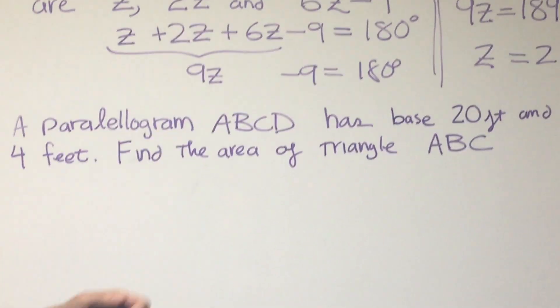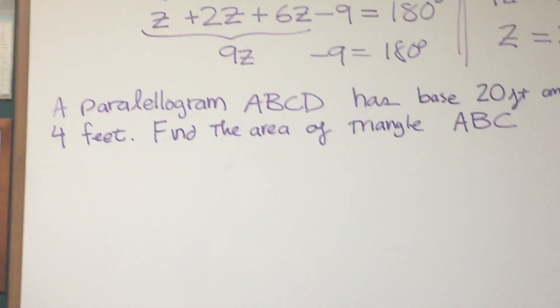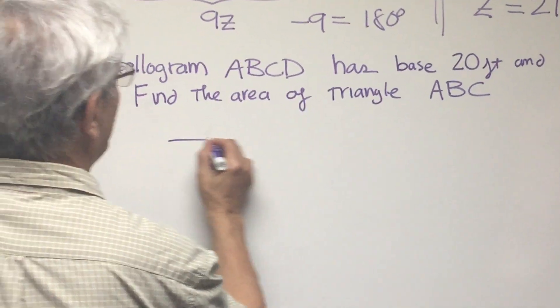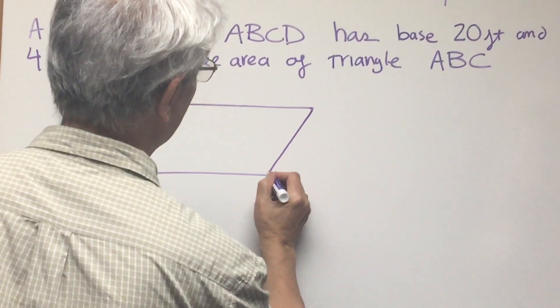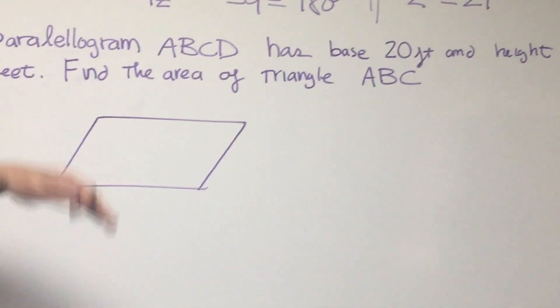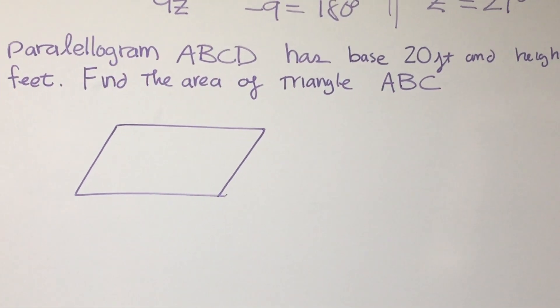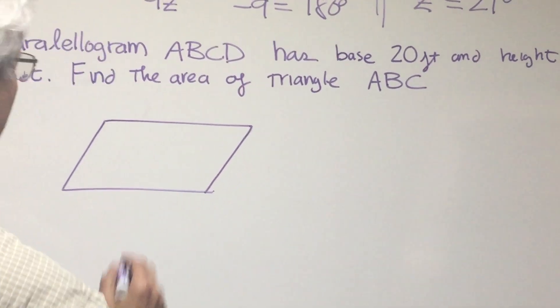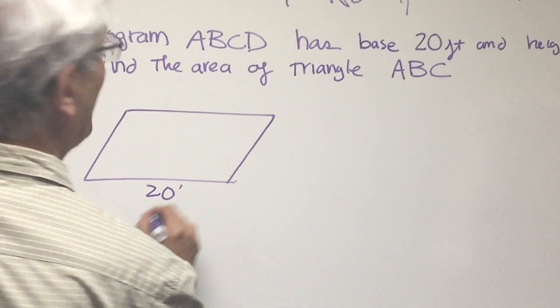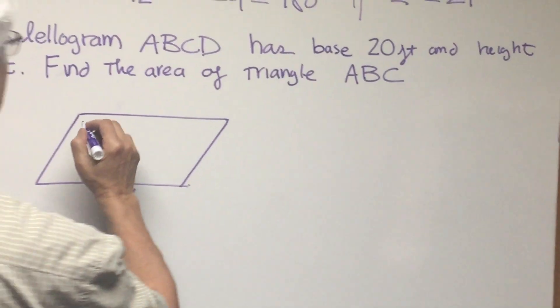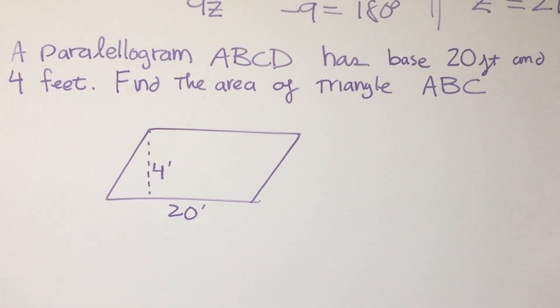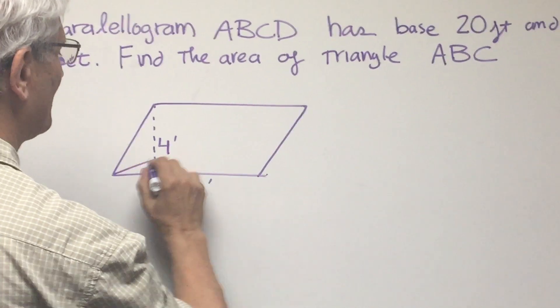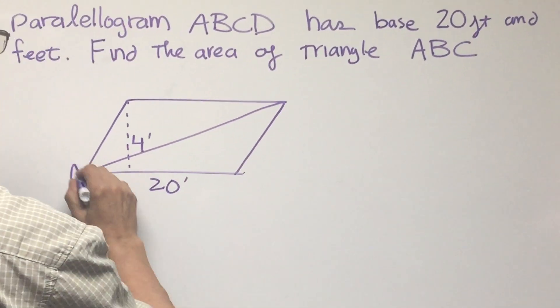Okay, here's another straightforward problem, but it's nice in that it incorporates the area of a parallelogram. So here's a parallelogram, which is a quadrilateral in which the opposite sides are parallel, which has a base of 20 feet and a height of 4 feet. So find the area of triangle ABC, which I'm going to label here.